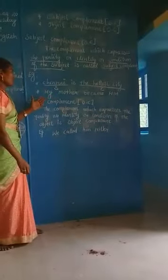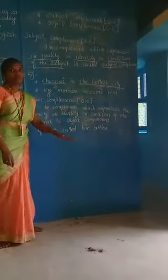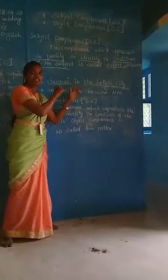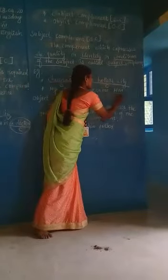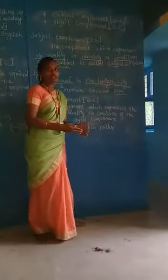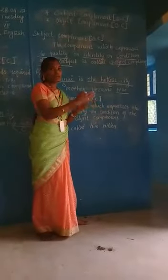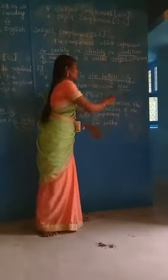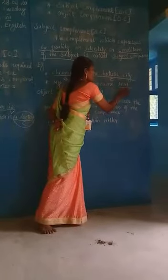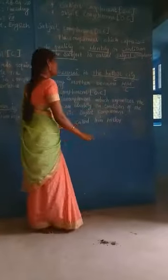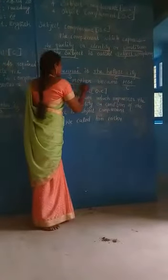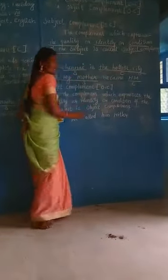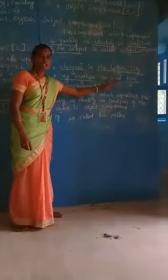Next example: 'My mother became Hacham.' My mother became what? In this sentence, the sentence isn't complete. If you add Hacham, doctor, or dentist, the sentence may be completed. So 'Hacham' is the word used for completing — this is complement. Who is Hacham? My mother is Hacham, so my mother is the subject here. Therefore, subject complement is used.